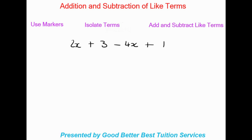Let's look at our keynotes and follow along with these steps: Step 1, Step 2, and Step 3. Looking at Step 1, it says we need to use markers to identify the like terms. We can see we have 2 with the variable x. We're going to focus on the variables and which exponents they have. This variable is x with an exponent of 1. Is there any other x with an exponent of 1? Yes, we have 4x — those are two like terms. Then we have 3 and 1, which have no variable or exponent attached, so those are like terms as well.